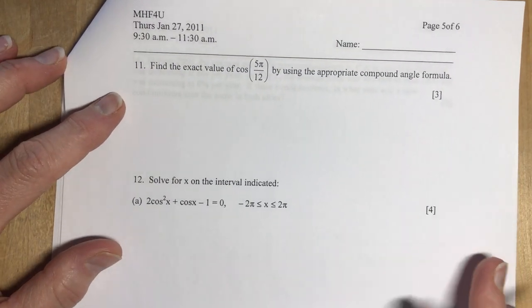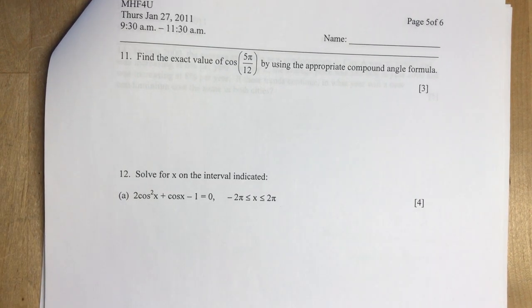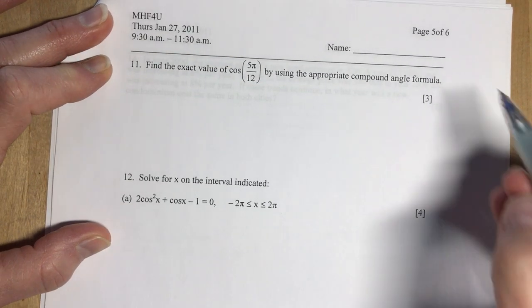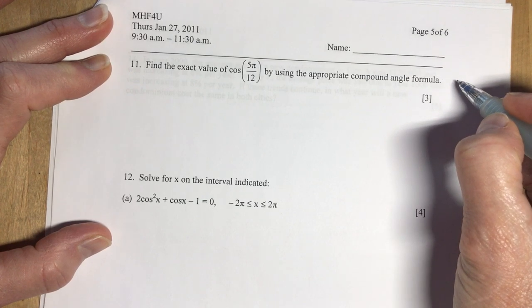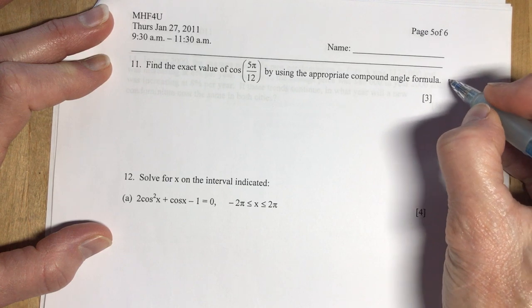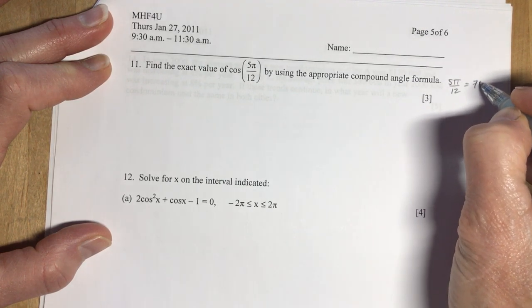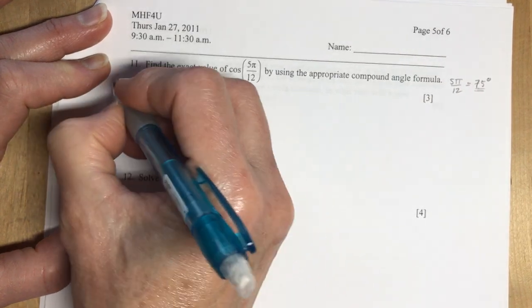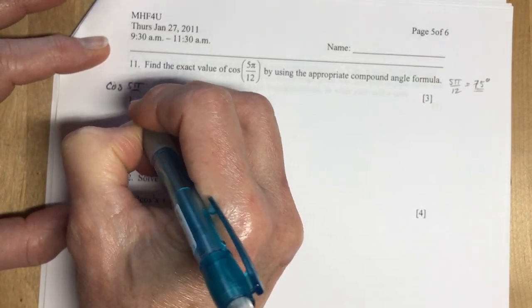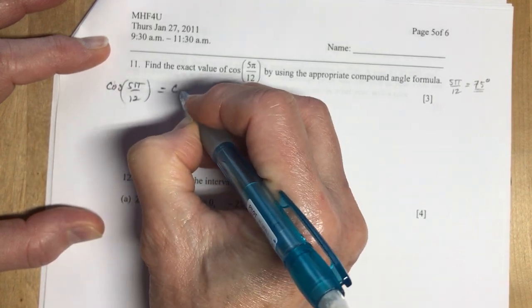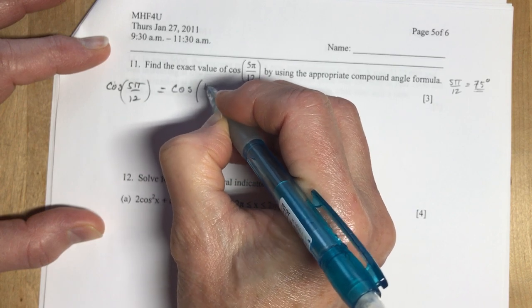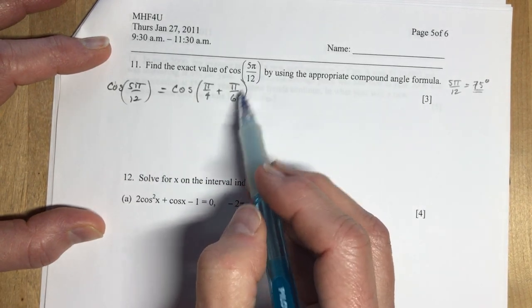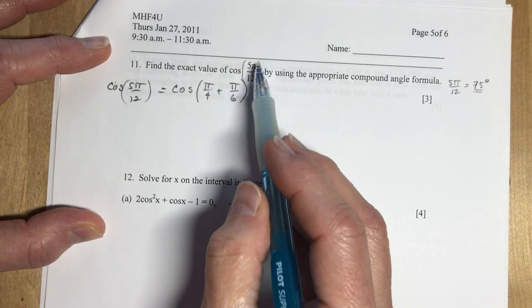Number 11. Find the exact value of cos 5π over 12 by using the appropriate compound angle formula. So remember when you're finding 5π over 12, the easiest way to do is figure out how many degrees is 5π over 12. So π over 12 is 15 degrees, and 15 times 5 is 75. So 5π over 12 equals 75 degrees. The easy ones to add to 75 are 45 and 30. So I'm going to say that the cos of 5π over 12 is going to be equal to the cos of... and we're going to use an addition formula, so π over 4 plus π over 6.